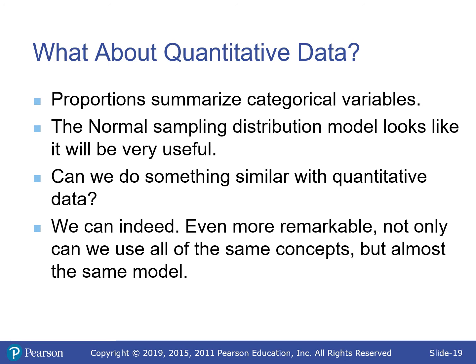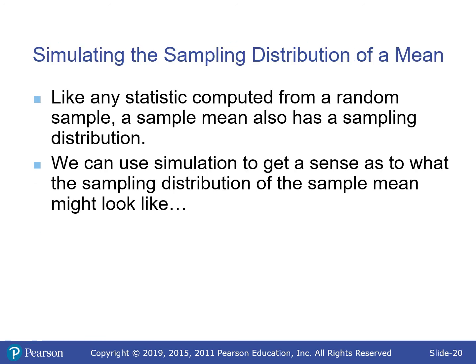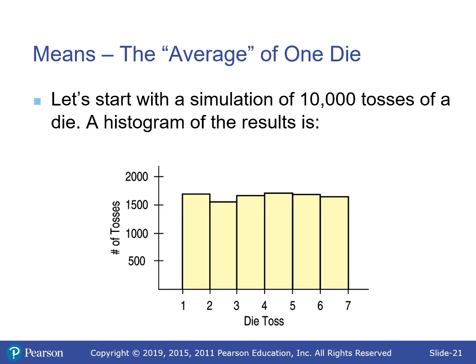What about quantitative data? Proportions summarize categorical variables, but we can use sampling distributions for means as well — for quantitative variables. Like any statistic computed from a random sample, the sample mean also has a sampling distribution. We can use simulation to get a sense of what it looks like. Here, we roll dice 10,000 times. The average is going to be about 3.5.